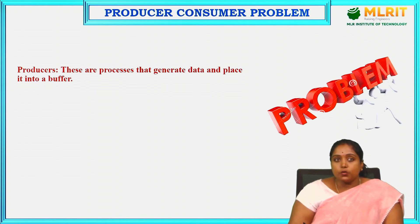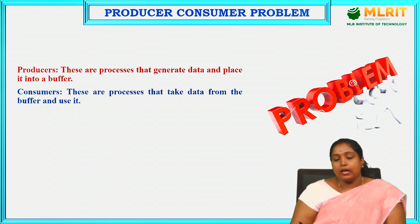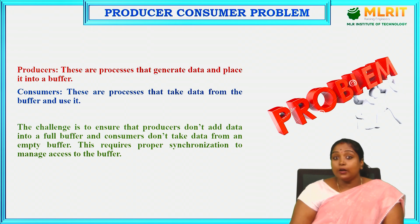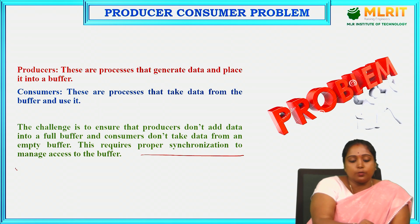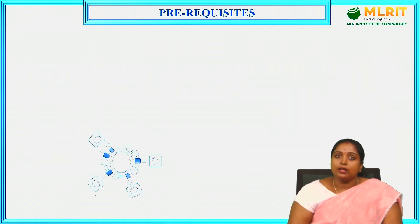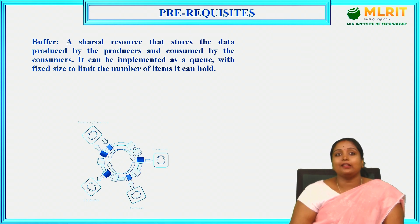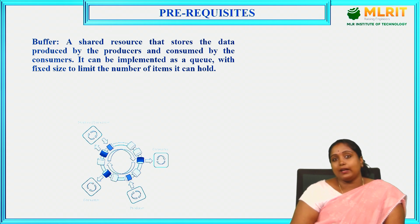What is the producer-consumer problem? Producers are the processes that generate data and place it into a buffer. Consumers are the processes that take data from the buffer and use it. The challenge is to ensure the producer does not add data to a full buffer and the consumer does not take data from an empty buffer. This requires proper synchronization to manage access to the buffer — a shared resource that stores data produced by producers and consumed by consumers. It can be implemented as a queue with a fixed size limit.